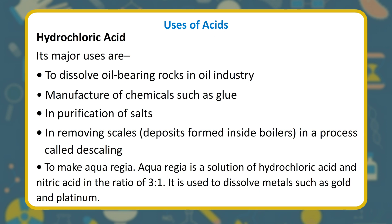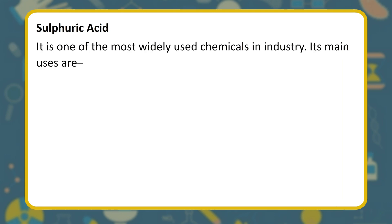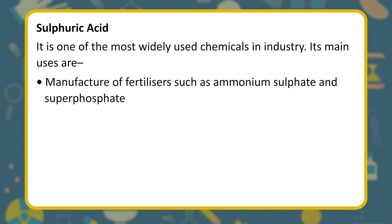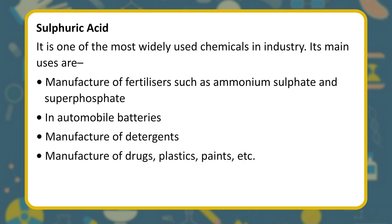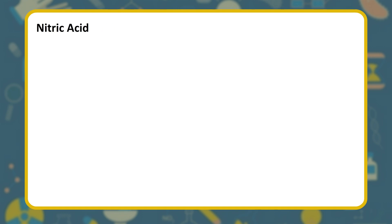Sulfuric acid is one of the most widely used chemicals in industry. Its main uses are: manufacture of fertilizers such as ammonium sulfate and superphosphate; in automobile batteries; manufacture of detergents; manufacture of drugs, plastics, and paints; manufacture of copper sulfate and Epsom salts; and in textile, paper, and leather industries.